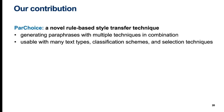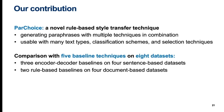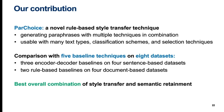Our technique is called paraphrase choice, or ParChoice, and it combines multiple paraphrasing techniques to generate a large number of candidates. It can be used with many different selection schemes for choosing the best-performing paraphrase depending on the task. We compare ParChoice across multiple datasets with three encoder-decoder baseline techniques and two rule-based baseline techniques. We demonstrate that ParChoice has the best combined effect of style transfer and semantic retainment.